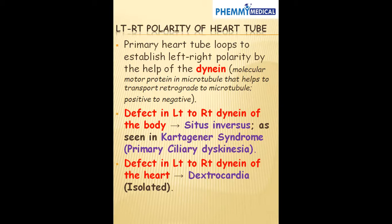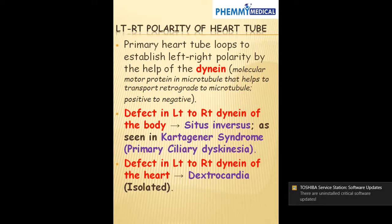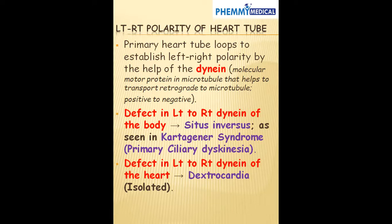— it can lead to a condition called situs inversus, whereby you have all the organs on the opposite side. For example, the liver is normally on the right side, so the liver can be on the left side. Also the spleen, which is normally on the left side, can now be on the right side. This also applies to the lungs. Normally on the right side we have three lobes; in this patient they would have three lobes on the left side and two lobes on the right side, and the heart needs to be on the right side instead of the left.